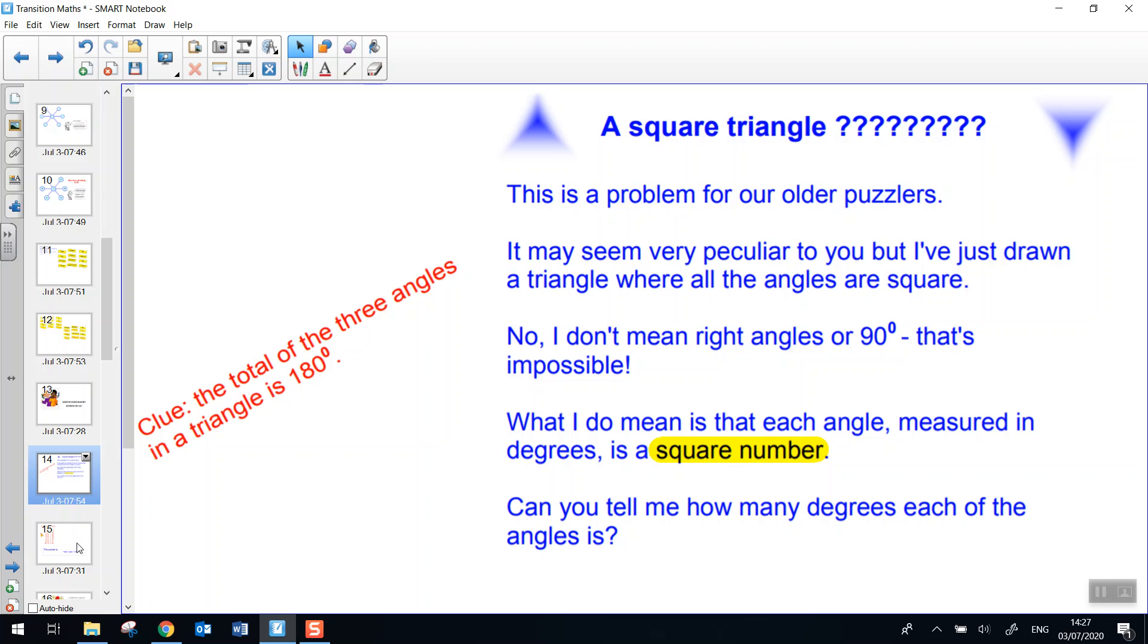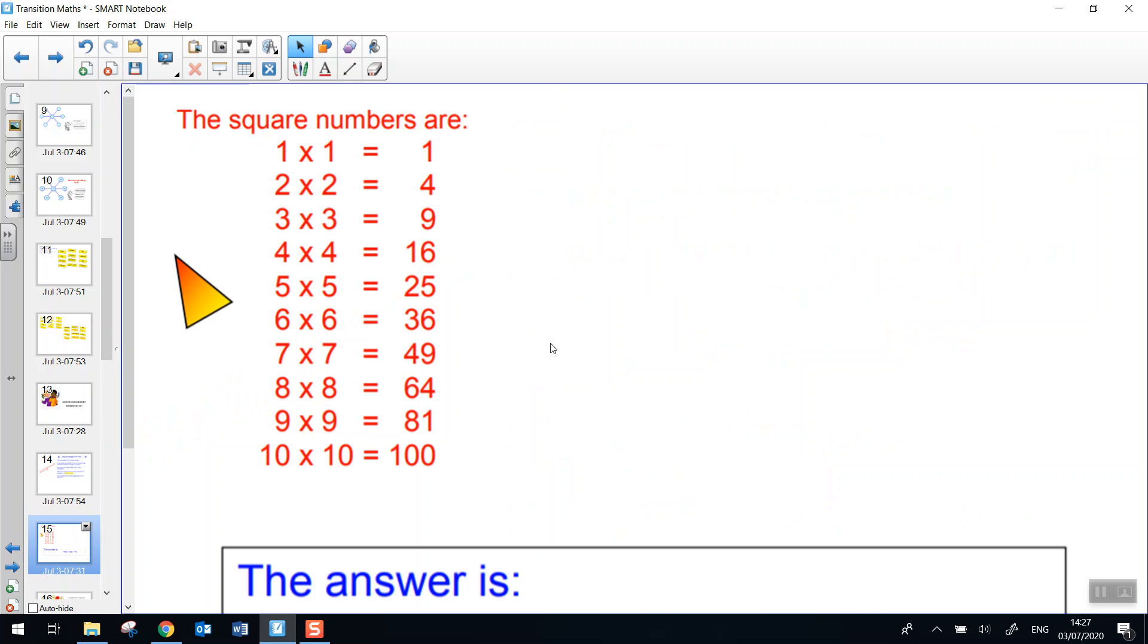Okay, so there's lots of thinking to do here. We needed to know the square numbers, so 1 times 1 is 1, 2 times 2 is 4, 3 times 3 is 9, 4 times 4 is 16 and so on. And then we had to choose three of these numbers here.